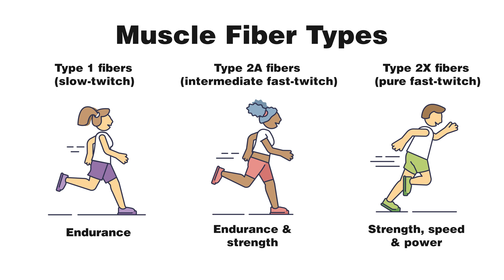You can use a similar principle to remember the difference between type 2a and type 2x fibers. Since A comes before X in the alphabet, type 2a fibers are used before type 2x fibers because they're more efficient. The type 2x fibers only need to be activated when extreme amounts of speed, power, and strength are required.